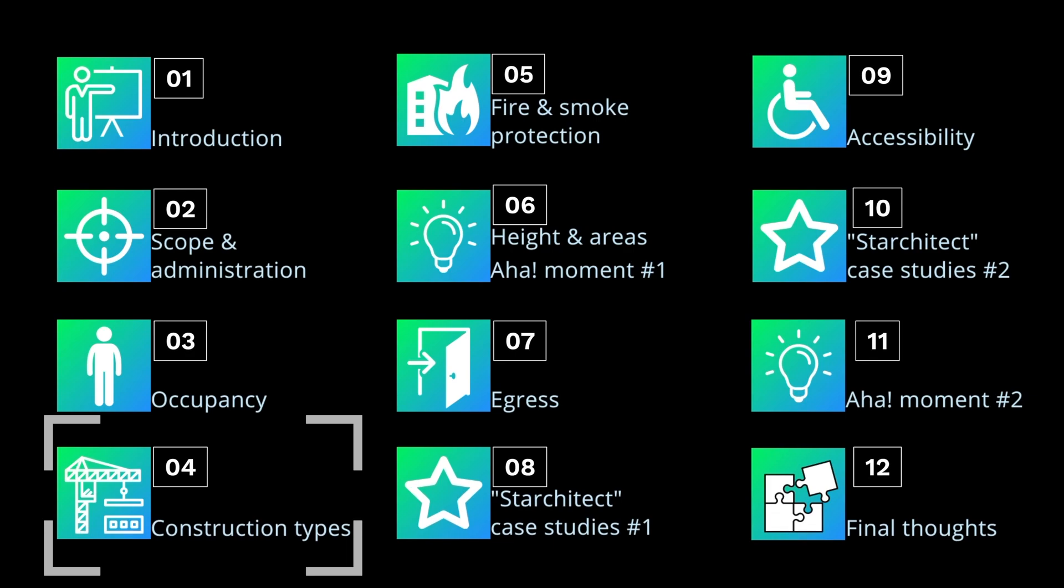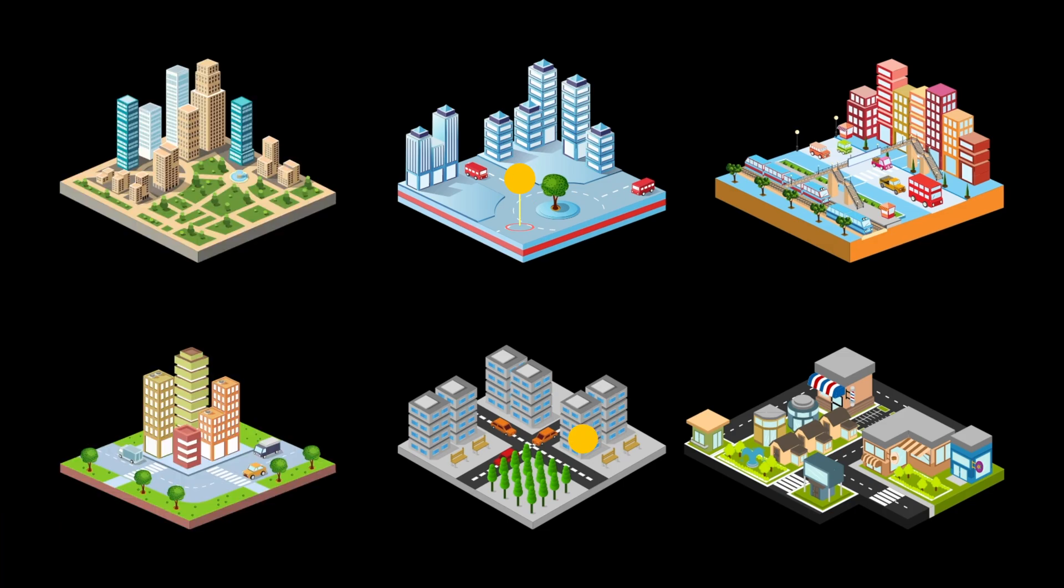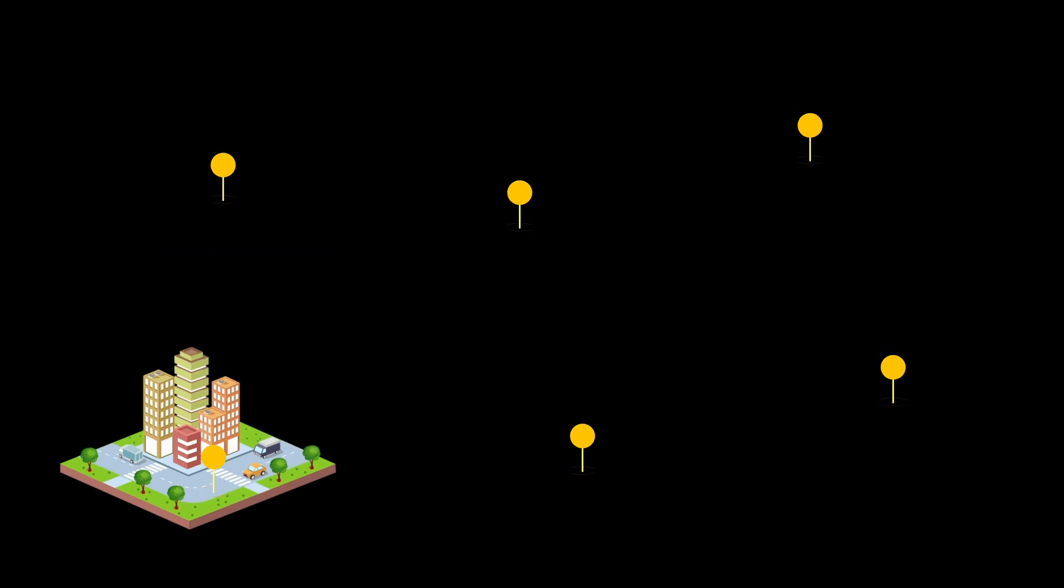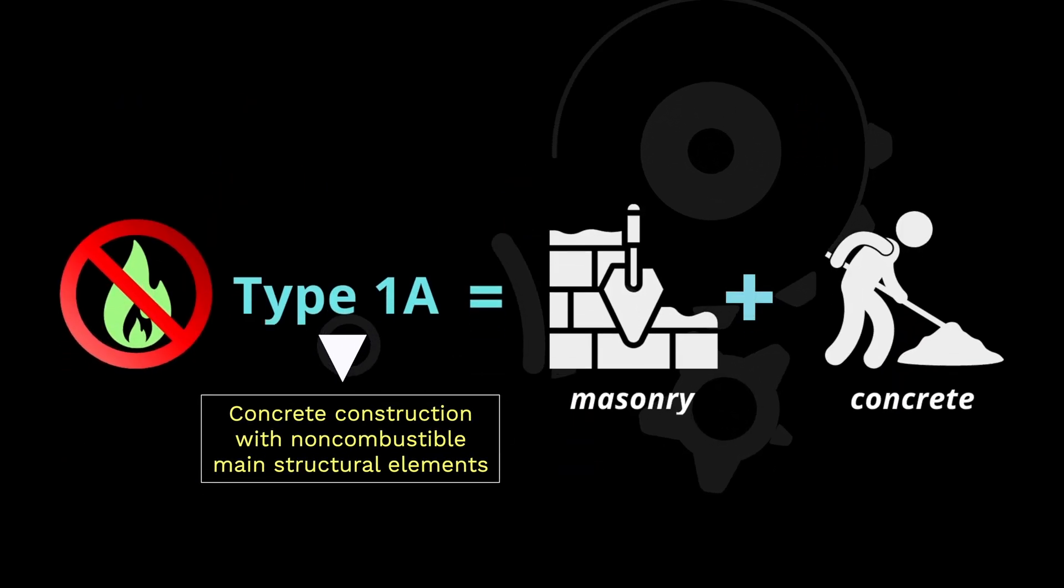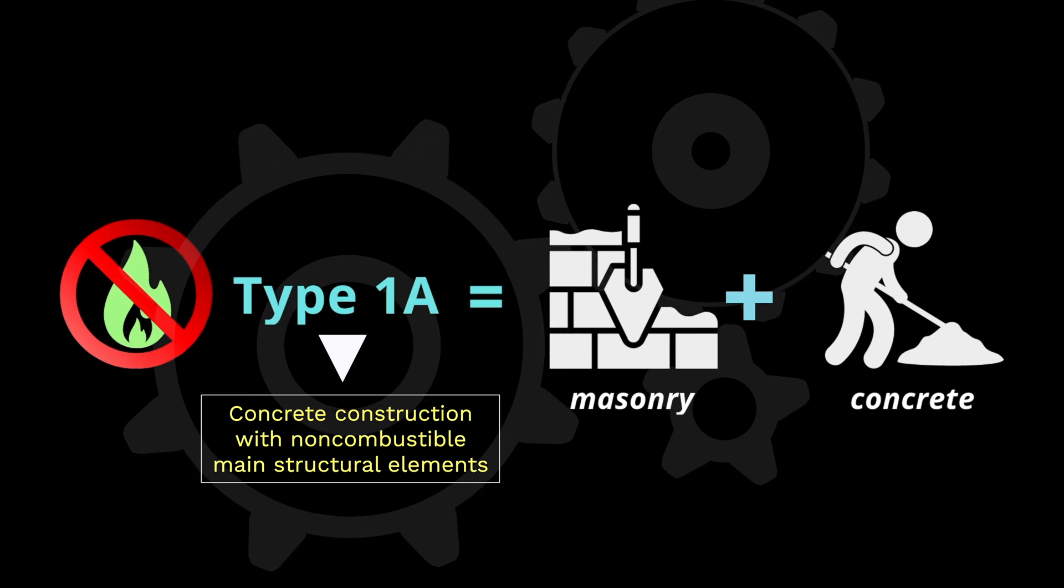Cool! Now we're ready to discuss different construction types. The buildings you've visited your entire life are made of other occupancies and classified into different construction types. The first is Type 1. This type is made of concrete construction, and its main structural elements are non-combustible. Non-combustible are materials that are not flammable.